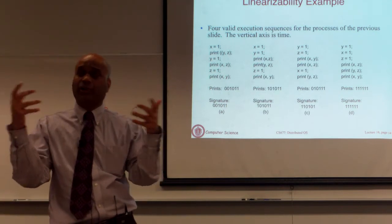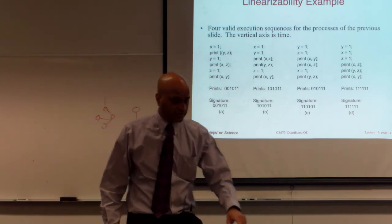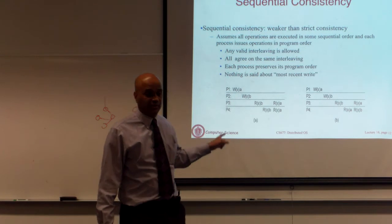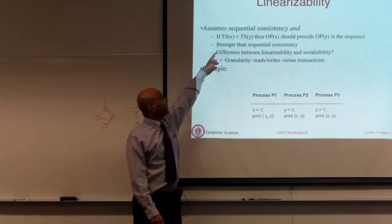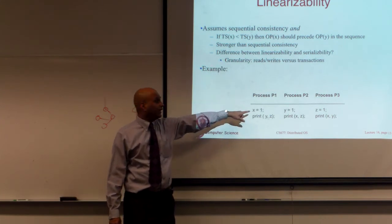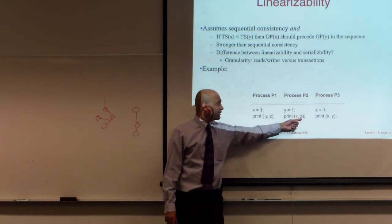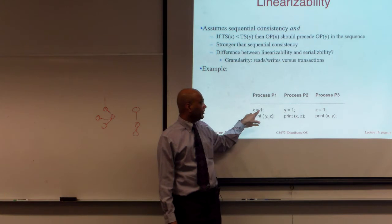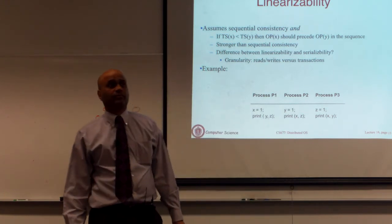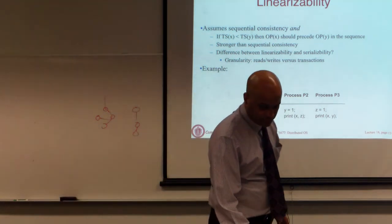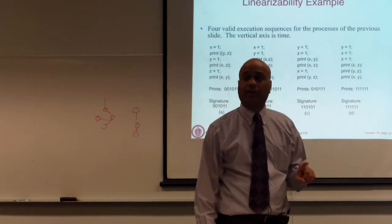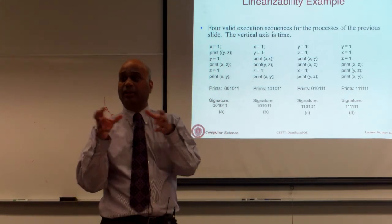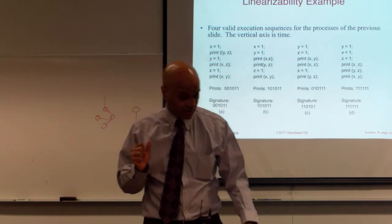The conditions for linearizability are: any interleaving is allowed, all processes agree on the same interleaving, each process preserves its program order, and furthermore, if the timestamp of X is less than the timestamp of Y, that ordering must be respected. Linearizability sits between strict consistency and sequential consistency in terms of strictness. So: strict consistency is the strictest, linearizability is next, and sequential consistency is weaker than linearizability.